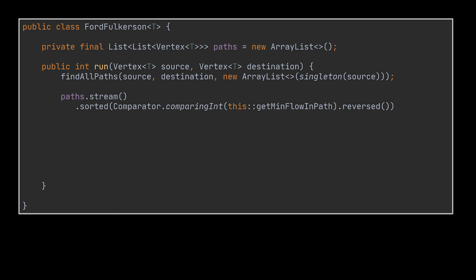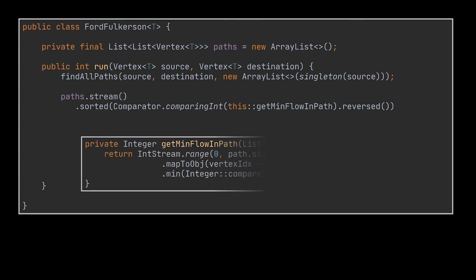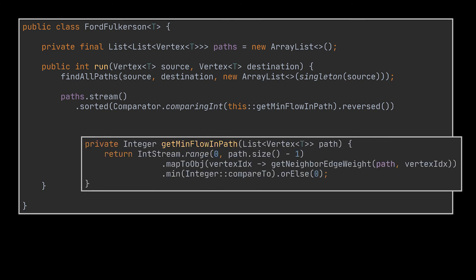Okay, now that we have all the paths, what we need to do is, if you recall, before calculating the max flow we need to sort these paths by highest minimum flow. And this was done with the help of the stream.sorted.reversed methods as we need to sort in descending order.